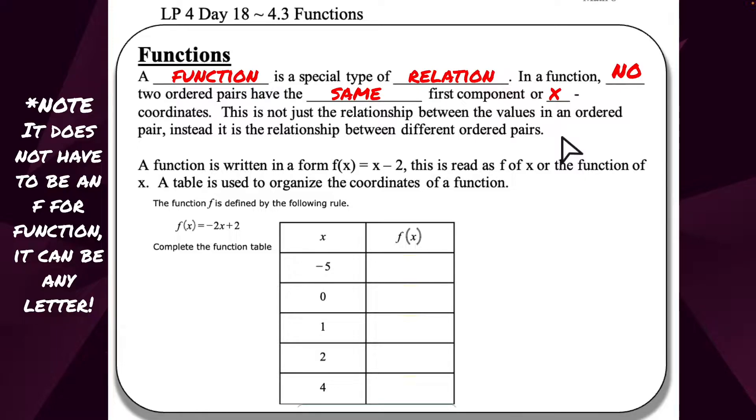Note, it does not have to be an f for the function. It can be any letter. A function is written in a form where we have f(x) = x - 2. This is just an example of what you might see. We read this as f of x or the function of x. When you see this f with the x in parentheses, we say f of x equals x minus 2.